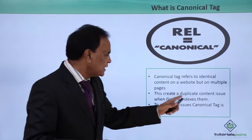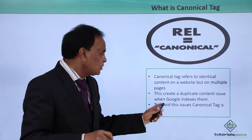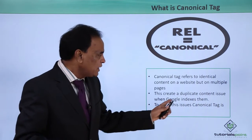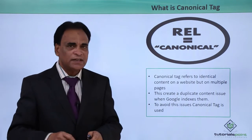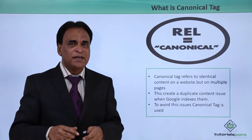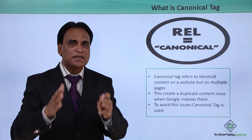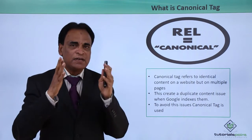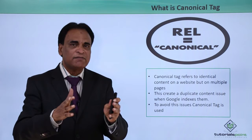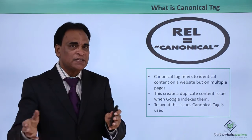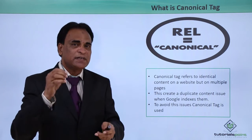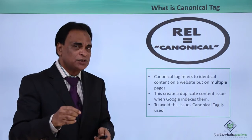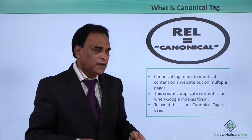Duplicate content issues arise when Google indexes those pages. To avoid the issues, concerns, and challenges related to duplicate content — where one page's content exists on another page — and to avoid Google treating them as separate duplicate pages when indexing, we use a Canonical Tag.